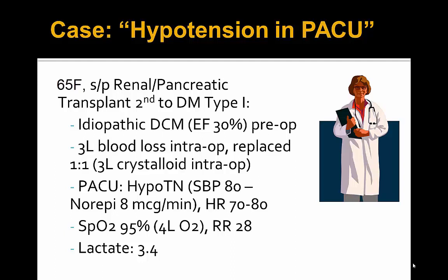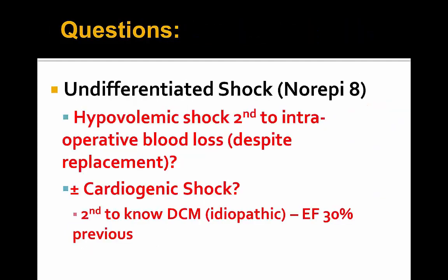In the PACU, the patient was still hypotensive with a systolic pressure of 80 despite a norepinephrine drip of 8 mcg per minute and a heart rate of 70s to 80s. She sat at about 95% on 4 liters of O2 and had a respiratory rate of 28. Her lactate was elevated at 3.4. The questions asked to the ICU and the ultrasonographer performing her echo centered on undifferentiated shock.